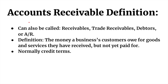So what is Accounts Receivable? Accounts Receivable can also be called Receivables, Trade Receivables, Debtors is also very common, and it's often abbreviated to A/R. The definition of Accounts Receivable is the money a business's customers owe for goods and services they have received but not yet paid. So if you're a business and you have given your customers goods and services and they have received that but have not paid, your Accounts Receivable is the money you are owed by your customers.